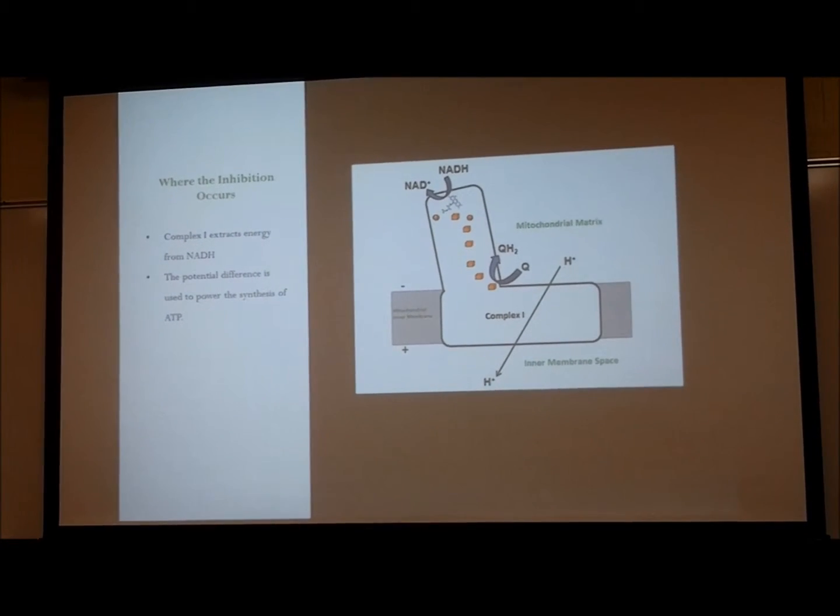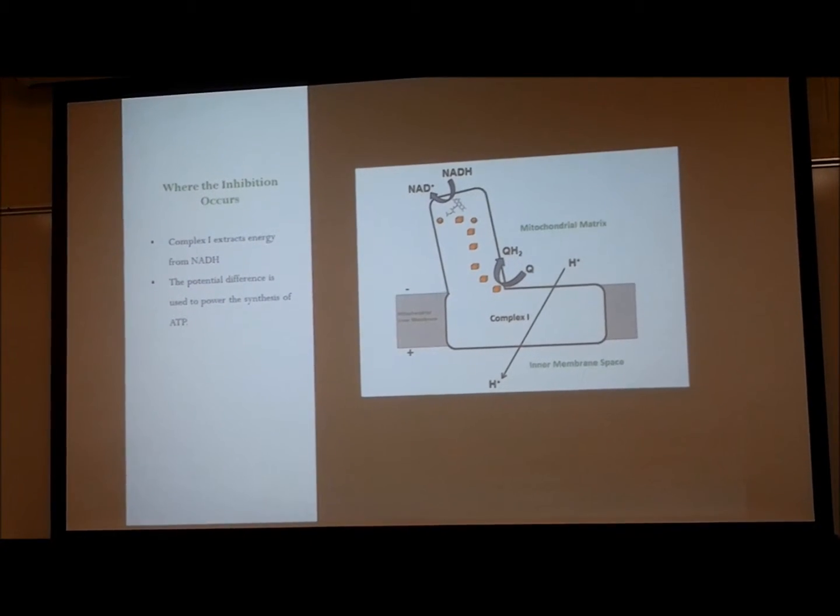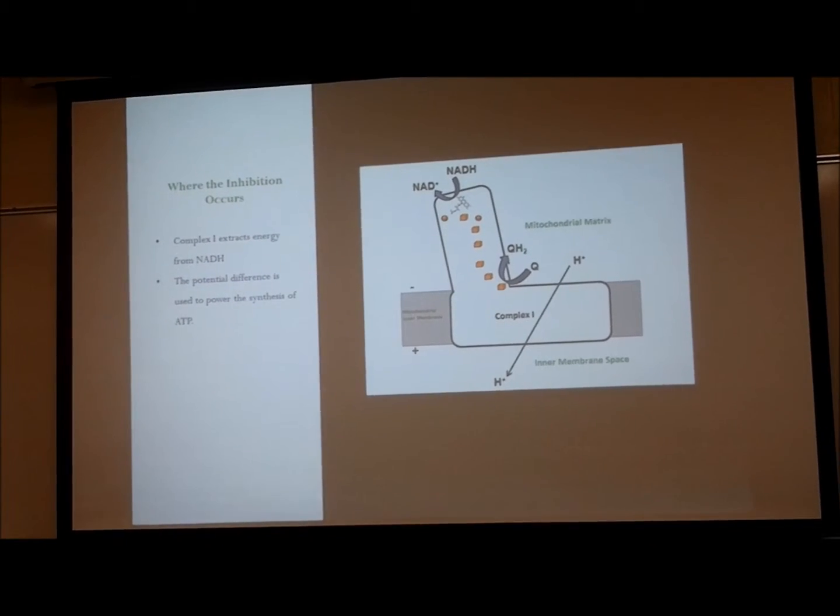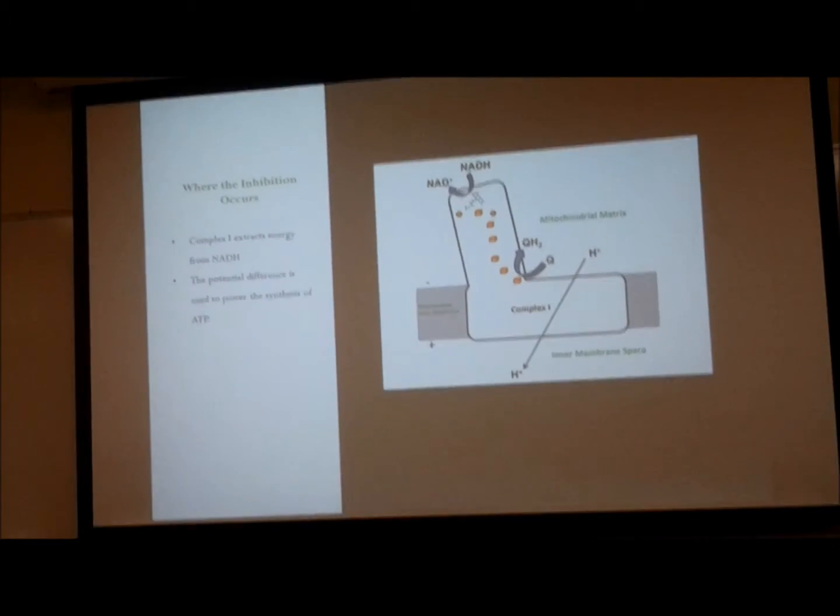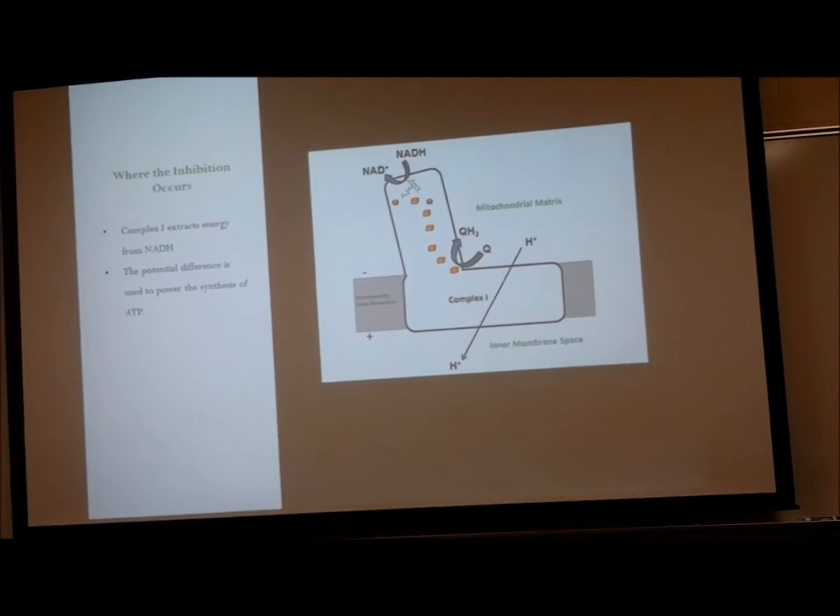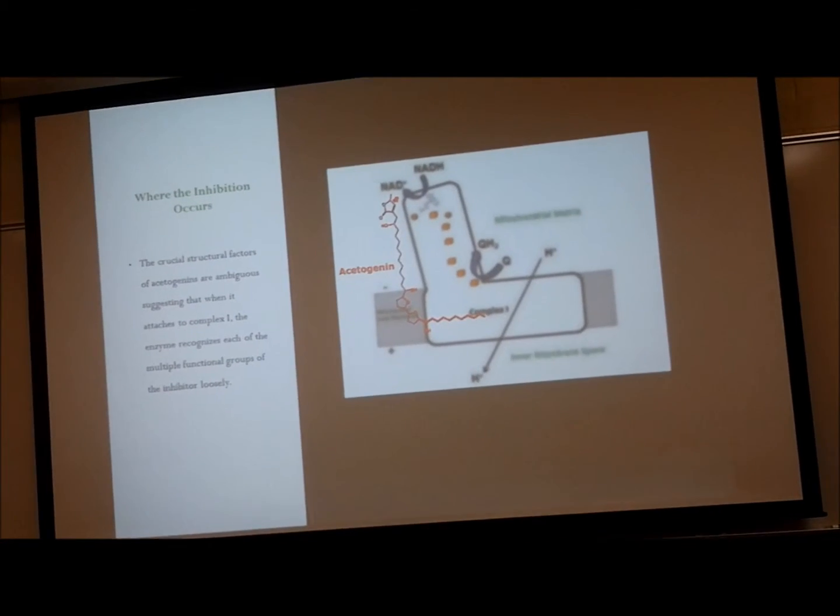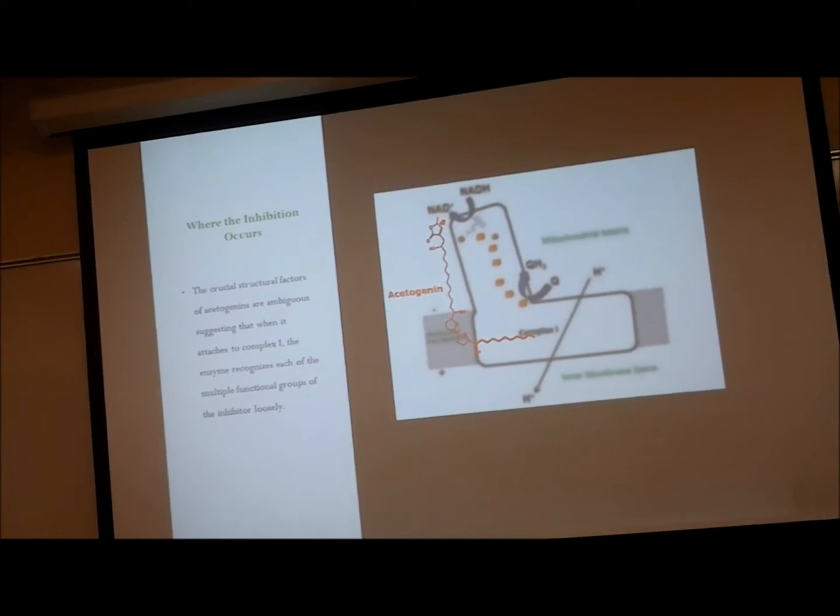Complex I extracts energy from NADH. The potential difference is used to power the synthesis of ATP. It traps the energy in a potential difference or voltage across the mitochondrial inner membrane. The potential difference powers ATP synthesis or the production of energy.